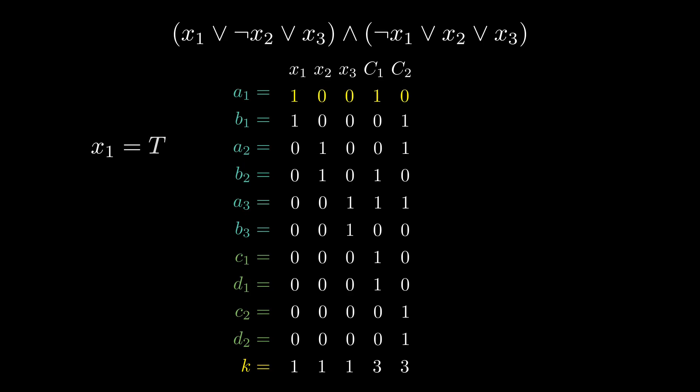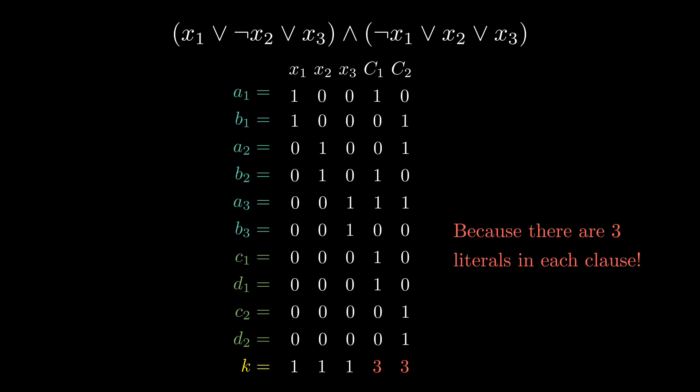If the value of a variable x_i is set to true, then we pick a_i from the set; if it's set to false, then we pick b_i. Since the digits of k that correspond to the variables are set to 1, we must pick exactly 1 of a_i and b_i, which aligns with how a variable is either set to true or false, but not both. But why do we set the digits of k that correspond to the clauses to 3? It's because there are 3 literals in each clause.